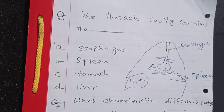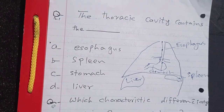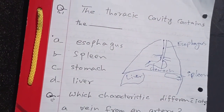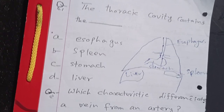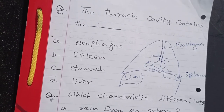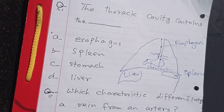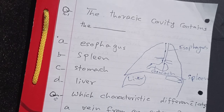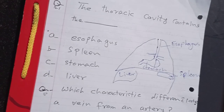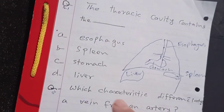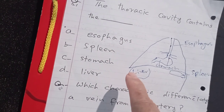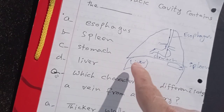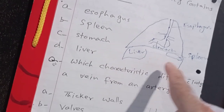Out of these structures, the esophagus is present in the thorax. The thoracic cavity contains the esophagus. The liver and spleen are in the abdomen.